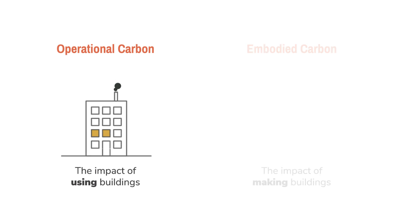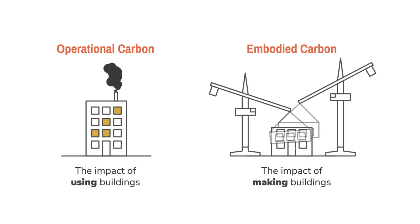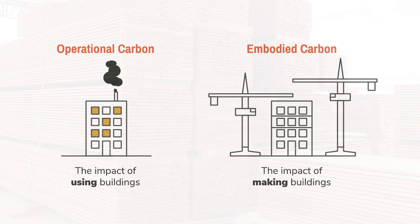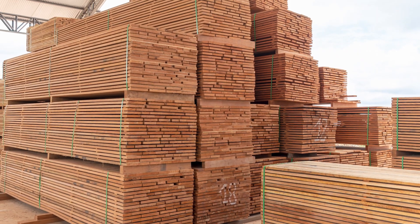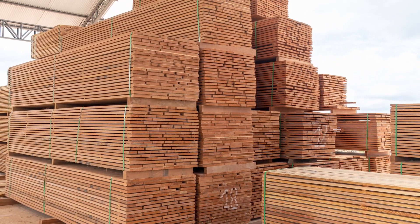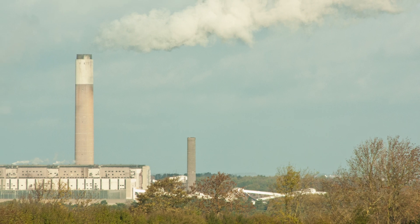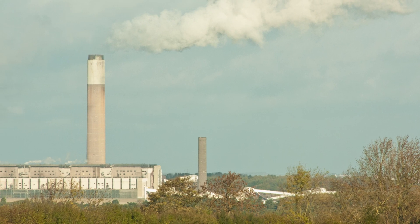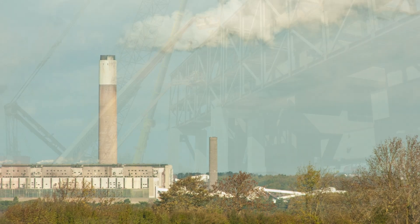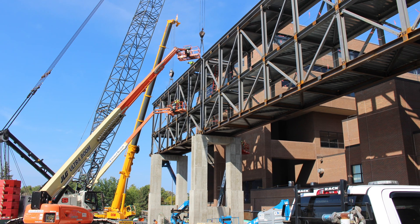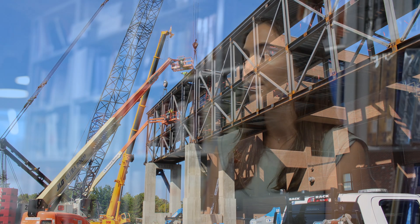Embodied carbon is the actual carbon associated with the items themselves — what it takes to create a product. We're talking about the extraction of raw materials, manufacturing processes, transport, and in the case of buildings, construction, the use phase, and end of life.